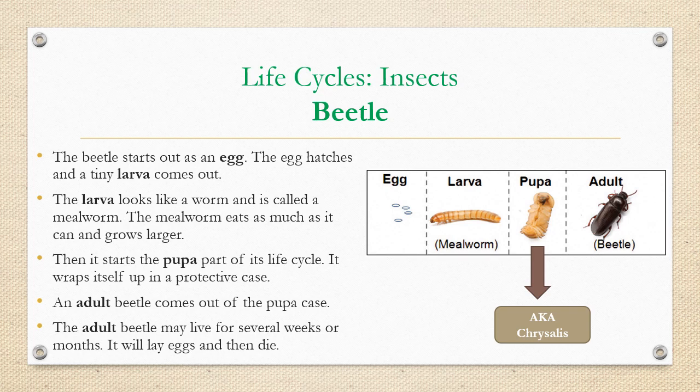A beetle, on the other hand, has a four-stage life cycle. It starts out as an egg and then hatches into a tiny larva, which can also be called a mealworm — it's just a weird little worm baby. Then it starts the pupa part of its life cycle. A pupa is the same thing as when a caterpillar makes a chrysalis and goes into its little protective case. Pupa and chrysalis are synonyms. It wraps itself up, and when it comes out, it comes out as an adult.